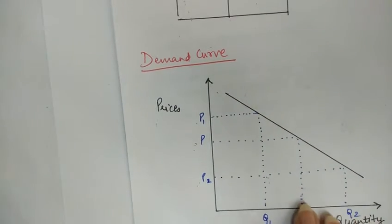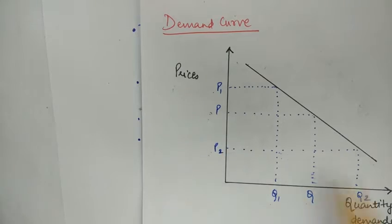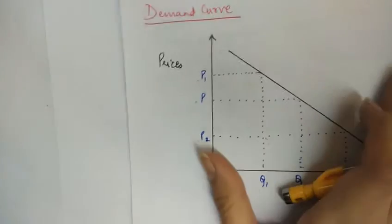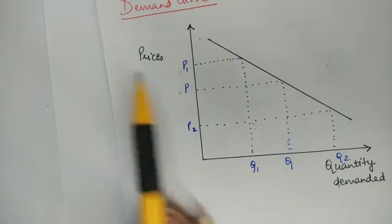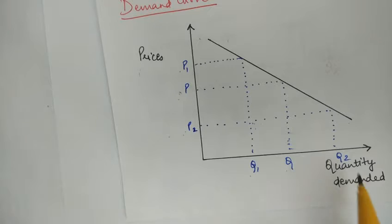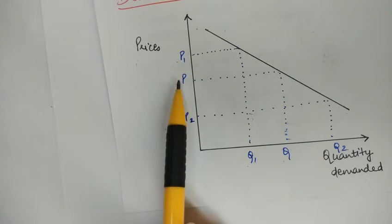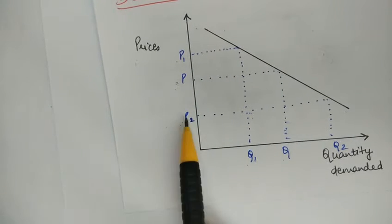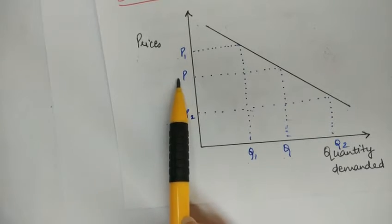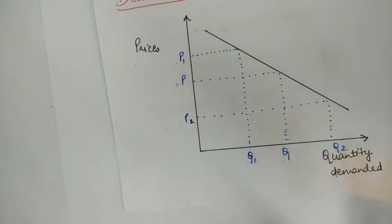A demand curve is a graphical representation of different prices and quantity demanded at different prices. On the y-axis we have prices and on the x-axis we have quantity demanded. As the price of the commodity falls from P1 to P, the demand increases from Q1 to Q. As the price increases from P2 to P, the quantity demanded falls from Q2 to Q.